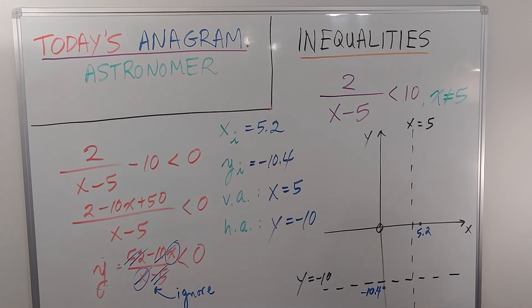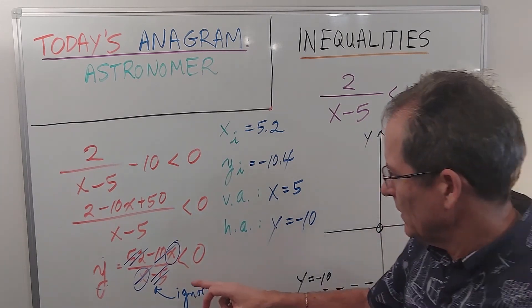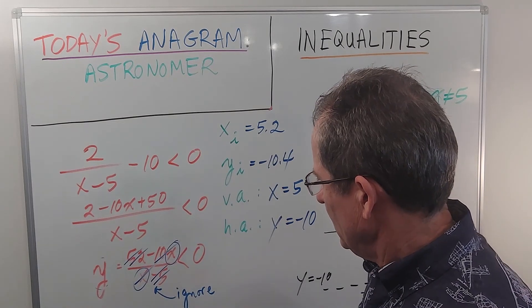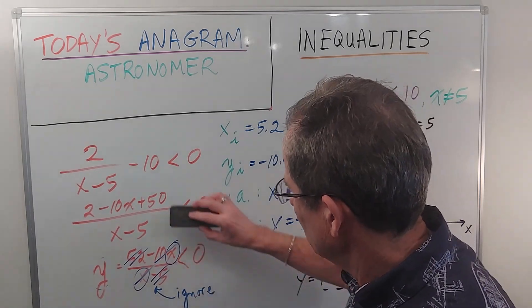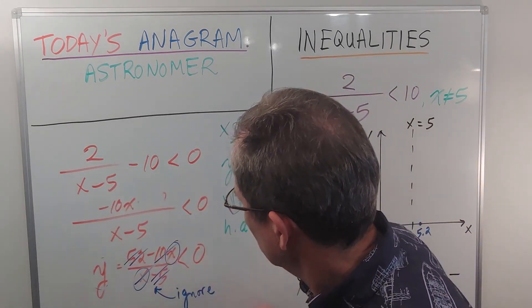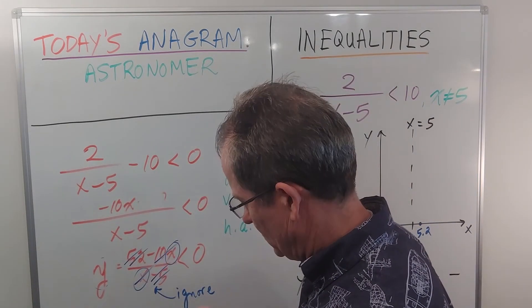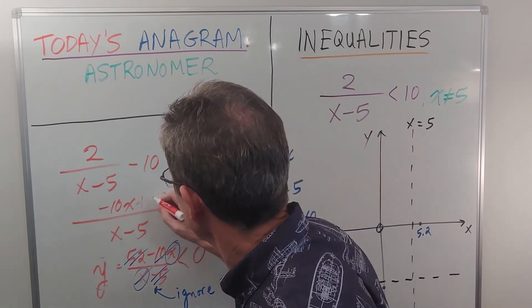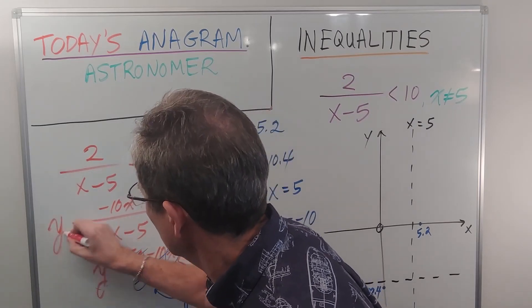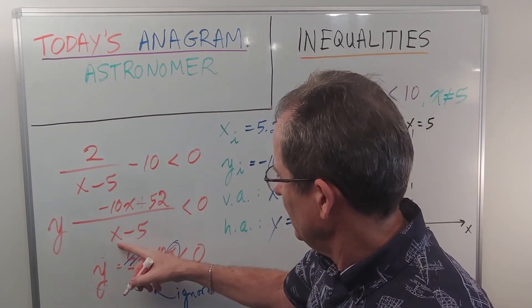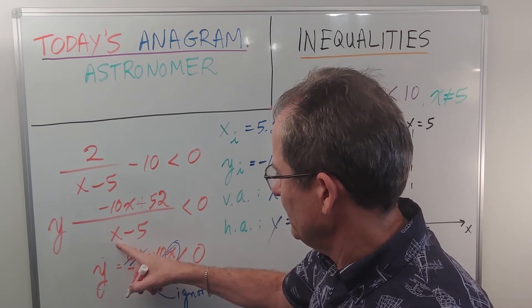And then we have to consider what happens if x is a little bit bigger than 5. Is it way up here or is it way down here? Well, if I put in this function, or if I rewrite it, let me just do it up here. That's plus 52, y equals.